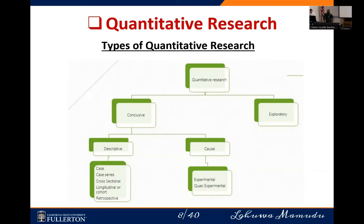The causal type of the conclusive part of quantitative research includes experimental and quasi-experimental. The difference is that in experimental research, the investigator has total control over the subject, while in quasi-experimental, the investigator has some but not total control. Quasi-experimental usually happens in very large populations with heterogeneous features.